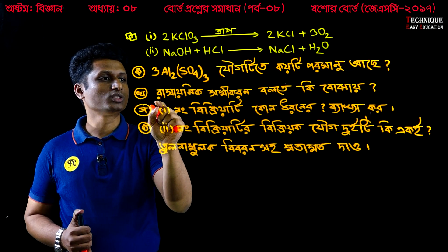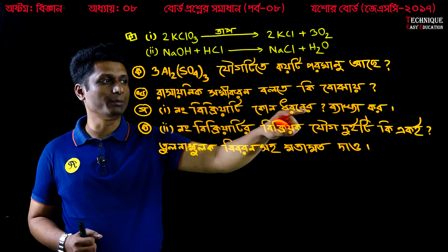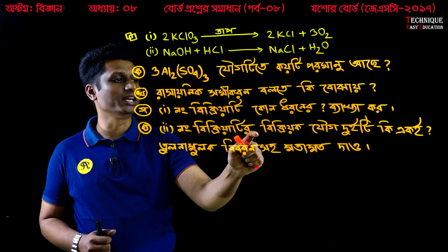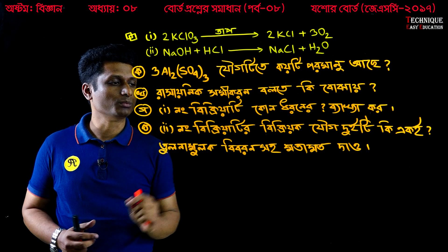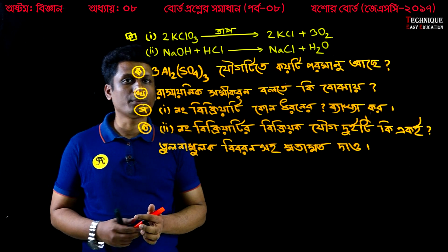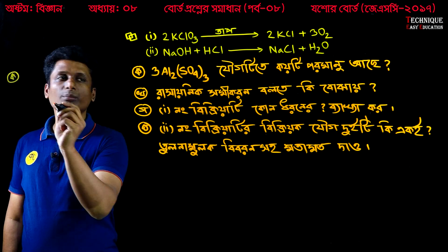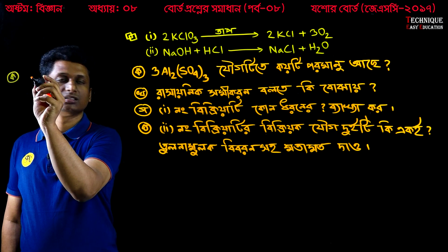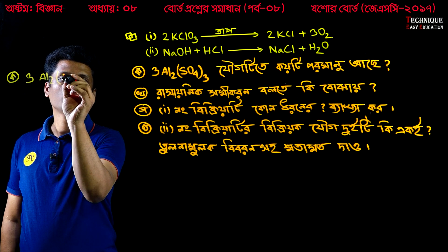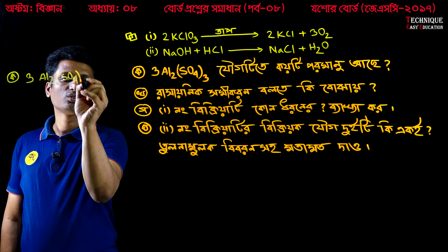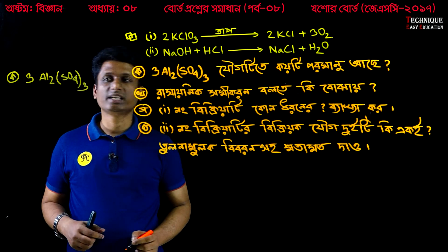Now, KClO3 — we are looking at Al2(SO4)3. So what does this mean? How do we calculate this? This is how we calculate it.